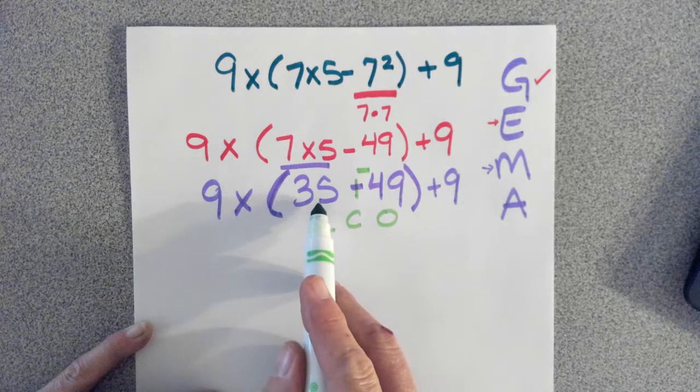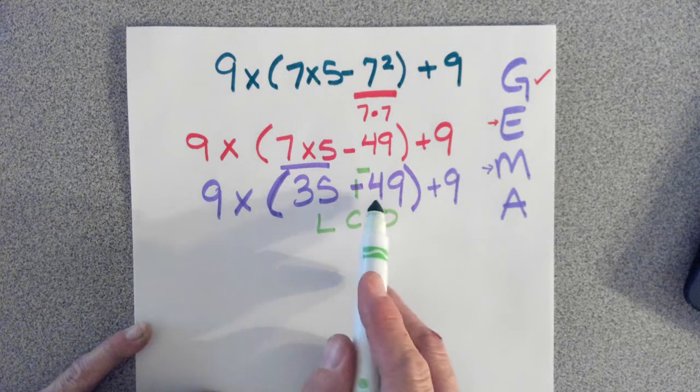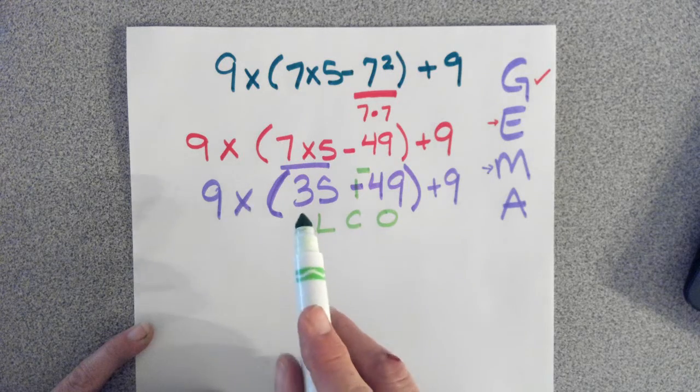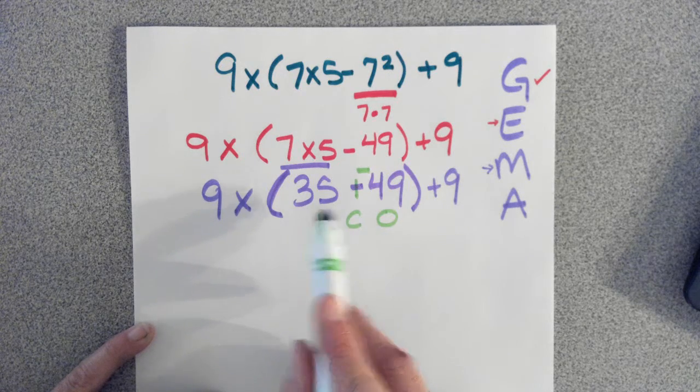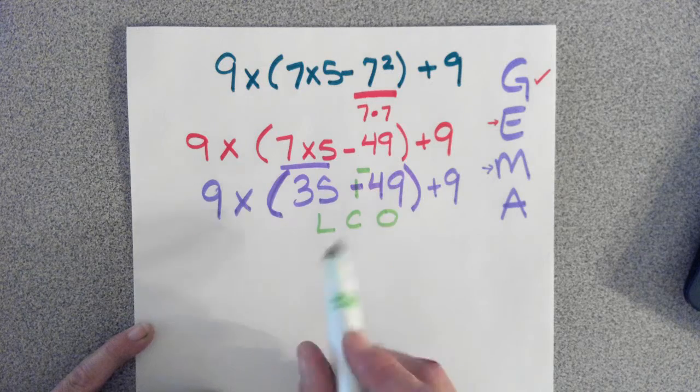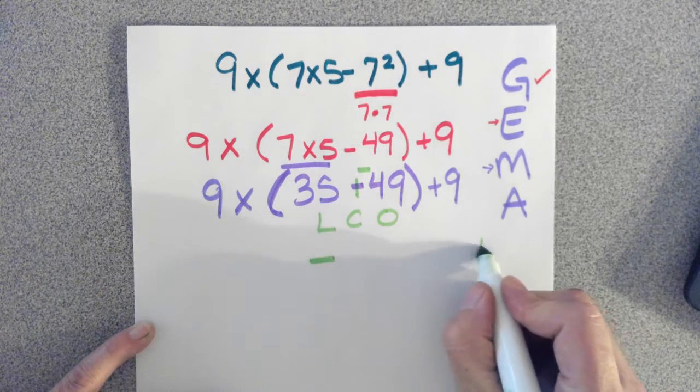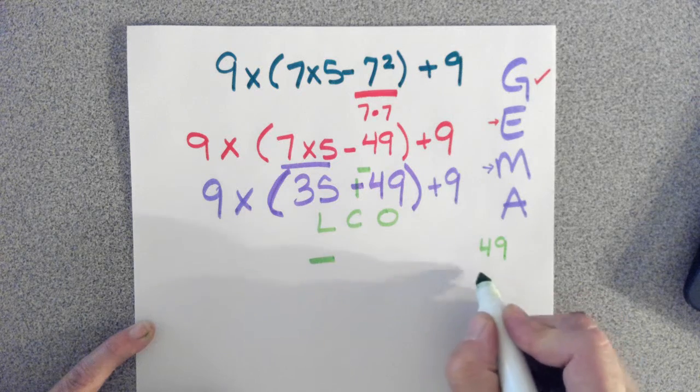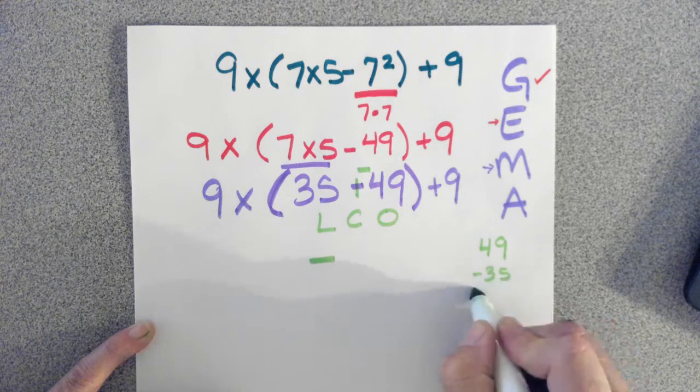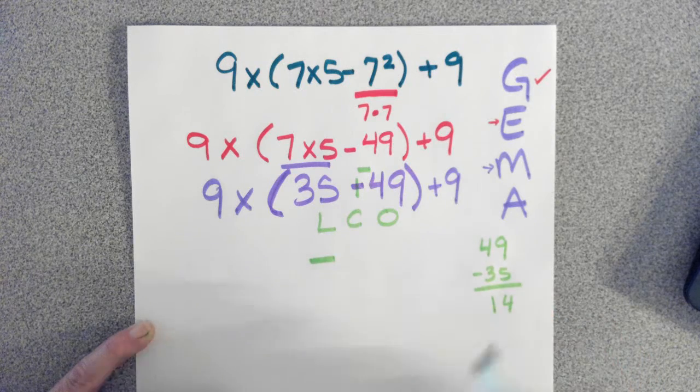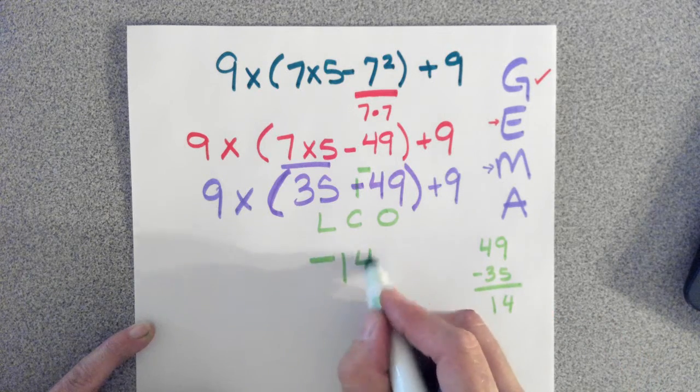So that means I've got 35 positives and I'm going to add 49 negatives. Our rules with zero pairs is that these 35 positives will cancel out 35 of the negatives, leaving me with some negatives left over. Let me find out how many. If I take 49 minus 35, 9 minus 5 is 4, 4 minus 3 is 1. That leaves me with 14 negatives.